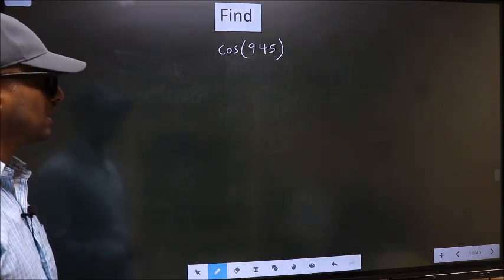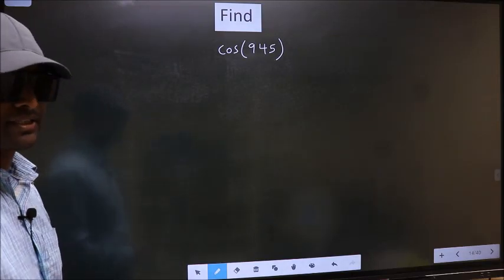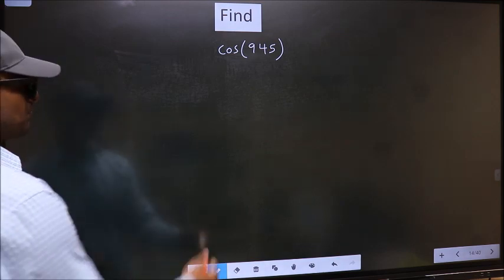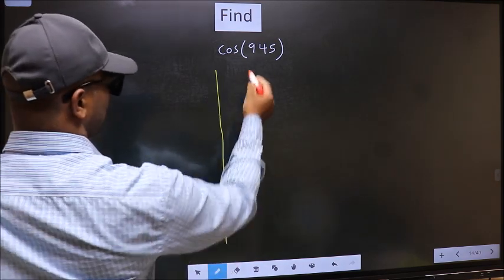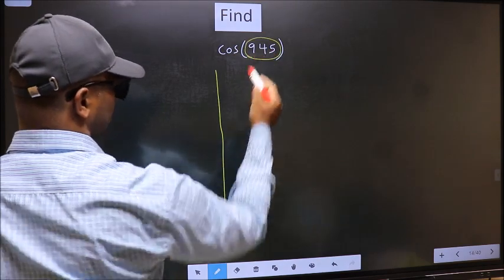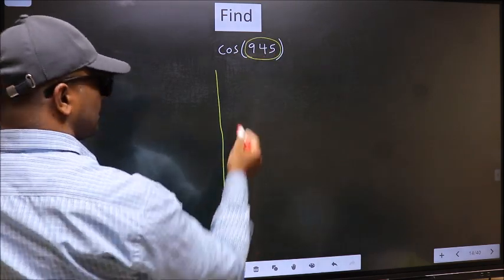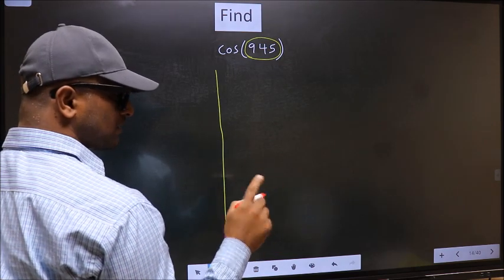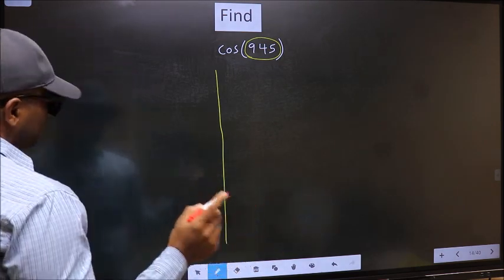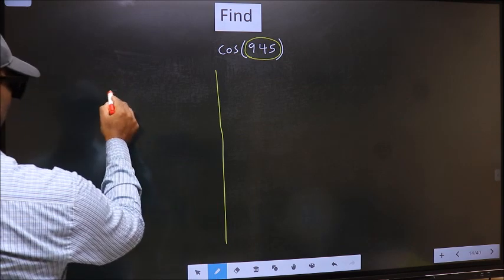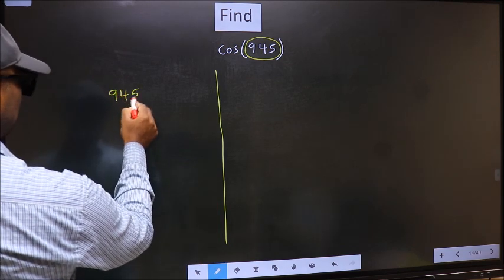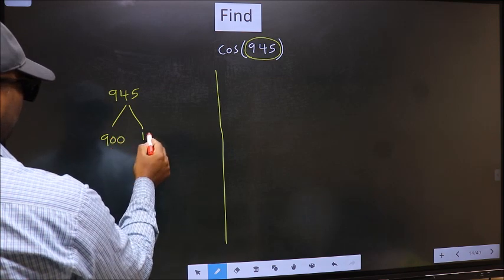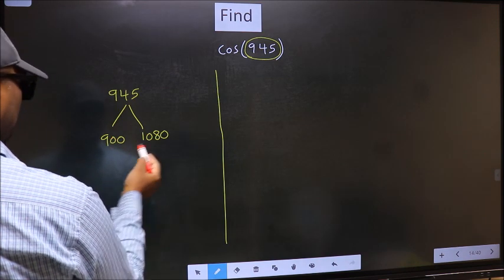To find cos(945°), we should follow this method. See, here we have 945. Now you should check: 945 lies between which two multiples of 180. What I mean is, 945 lies between 900 and 1080.